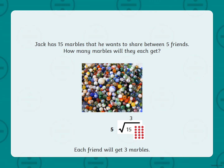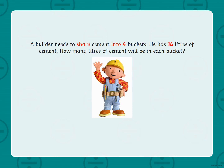Each friend will get three marbles. Our next sum: a builder needs to share cement into four buckets. He has 16 litres of cement. How many litres of cement will be in each bucket? Now this one's a little tricky because it's worded a different way around — we don't find out how much is being shared until the second part of the worded question. So again, I've highlighted those important numbers: 16 and four.